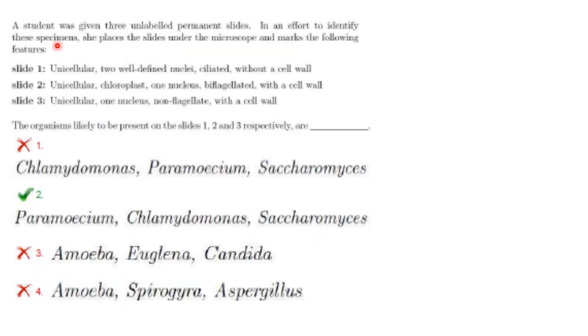A student was given 3 unlabeled permanent slides. In an effort to identify these specimens, she places the slides under the microscope and marks the following features: unicellular, 2 well-defined nuclei, ciliated, without cell wall. So unicellular with 2 well-defined nuclei and no cell wall represents Paramecium from the given options, and not Amoeba.